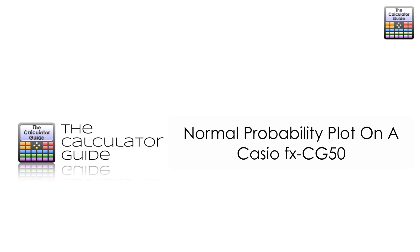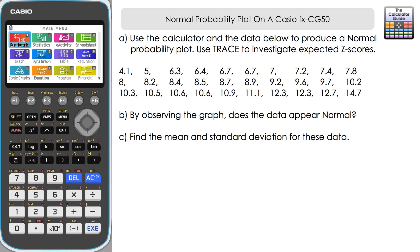Hello and welcome to the calculator guide video on normal probability plot on a Casio FX-CG50. We're going to use the calculator and the data below to produce a normal probability plot. Additionally, we're going to use the trace feature to investigate expected Z-scores.